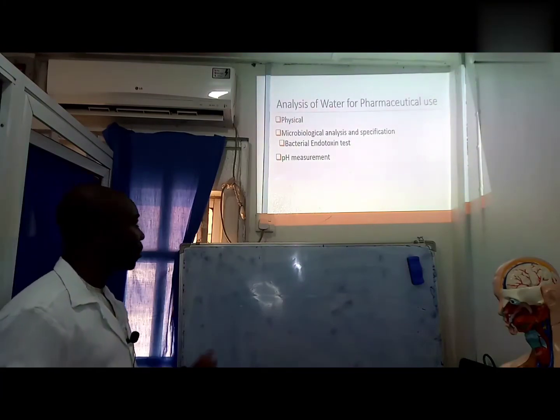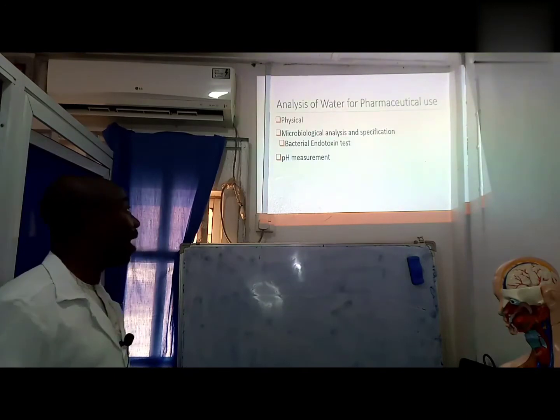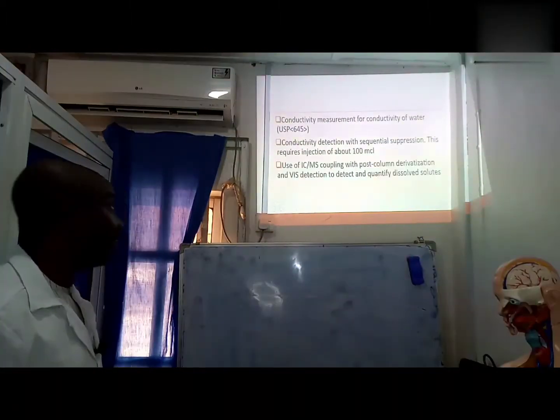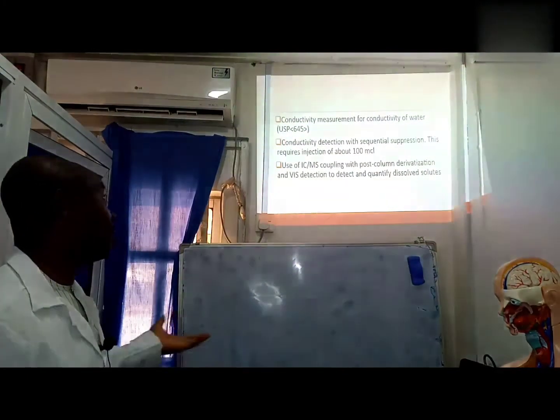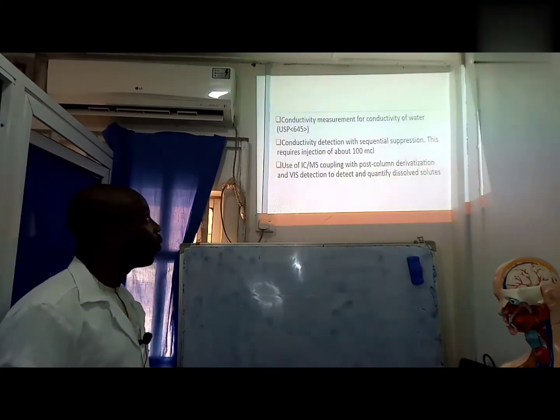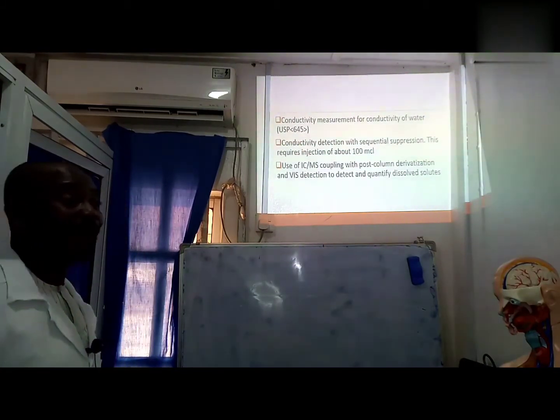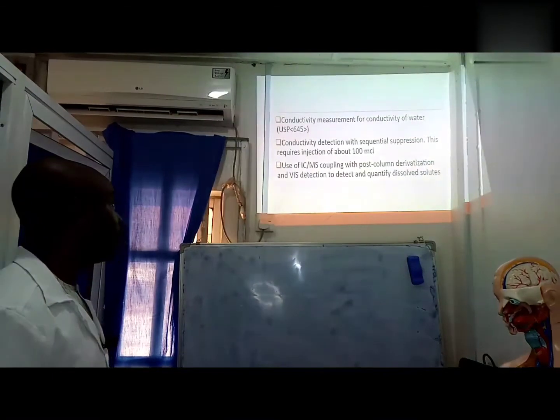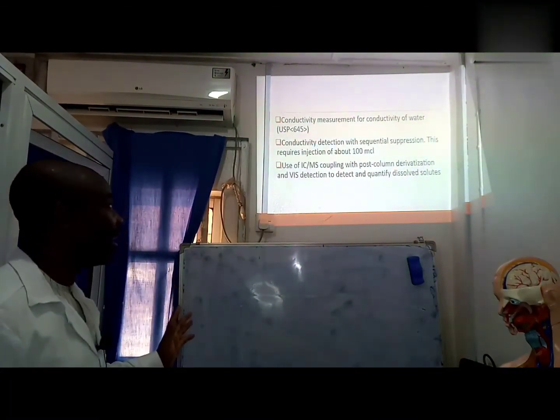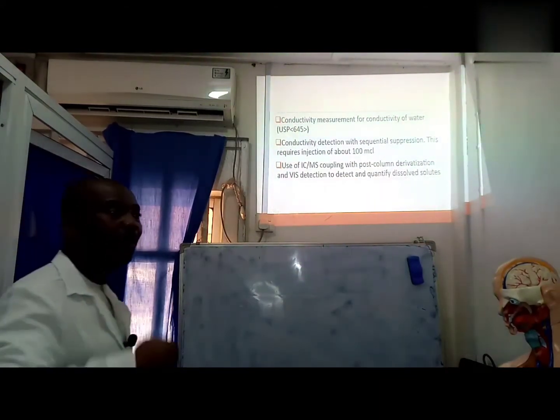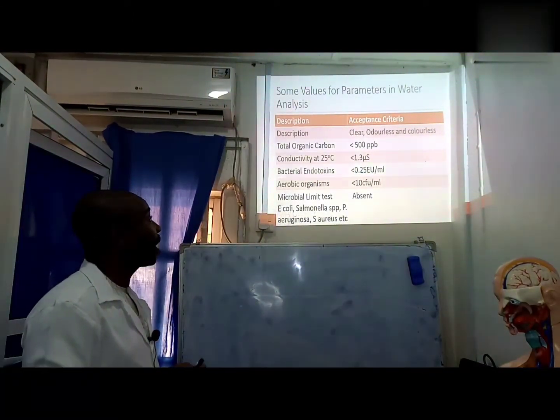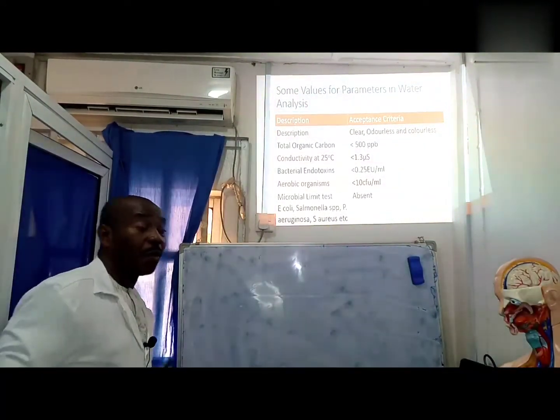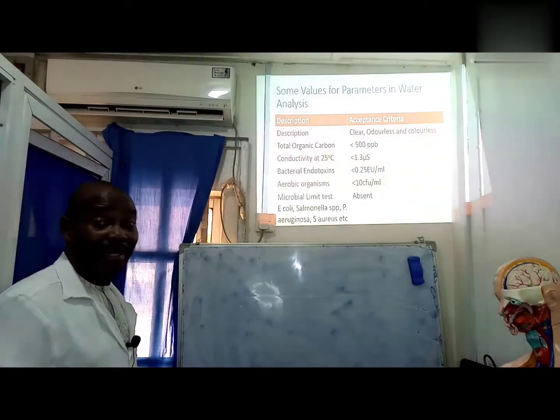Analysis of water for pharmaceutical use includes physical, microbiological, pH measurements, and all of that. Activity measurement is also a must in water for injection or water for pharmaceutical use. Conductivity detection with sequential suppression uses injection of about 100 microliters of water, just a very fractional volume, and the results we need are with us. Some values for parameters in water analysis are listed here. We need to look at all of this and ensure that the results we have, having done all the analysis, comply with what we have in the pharmacopoeia and the standards.